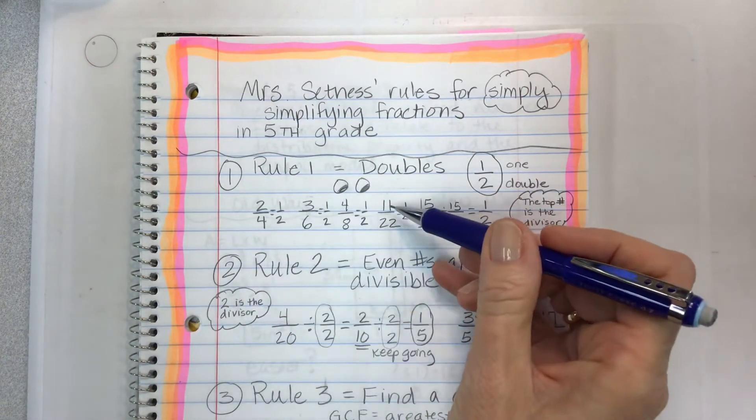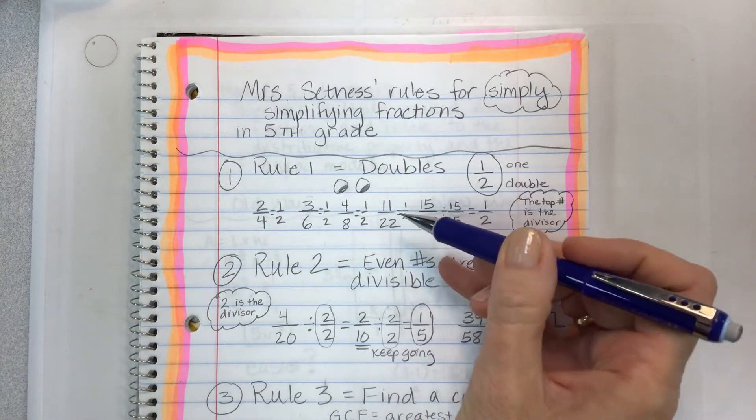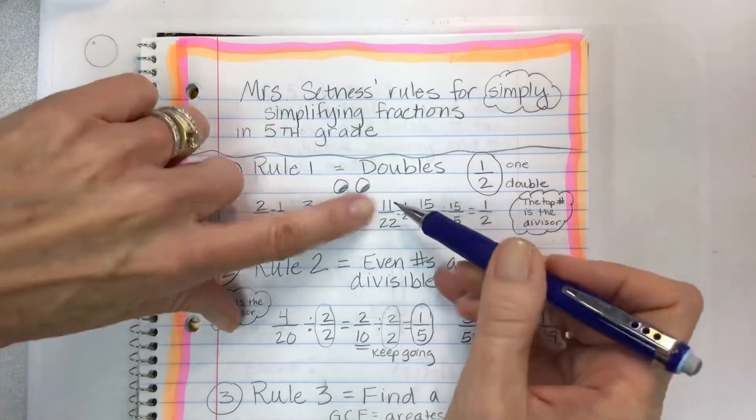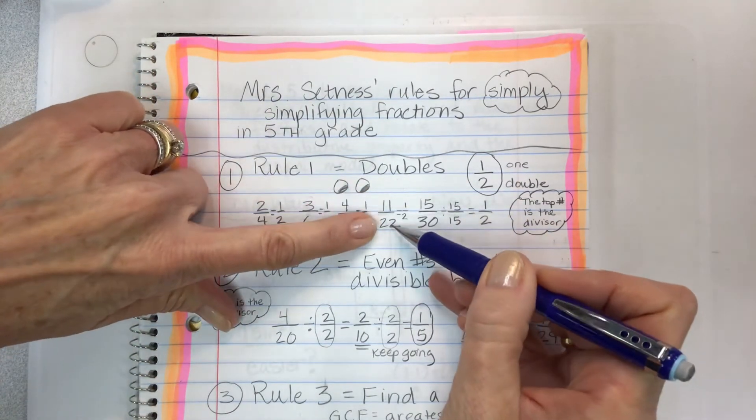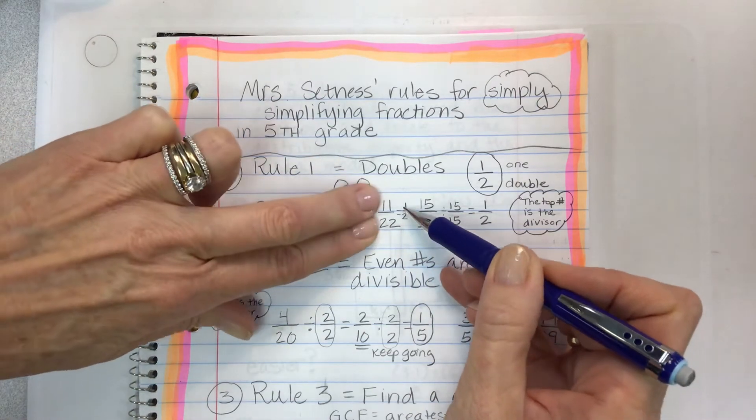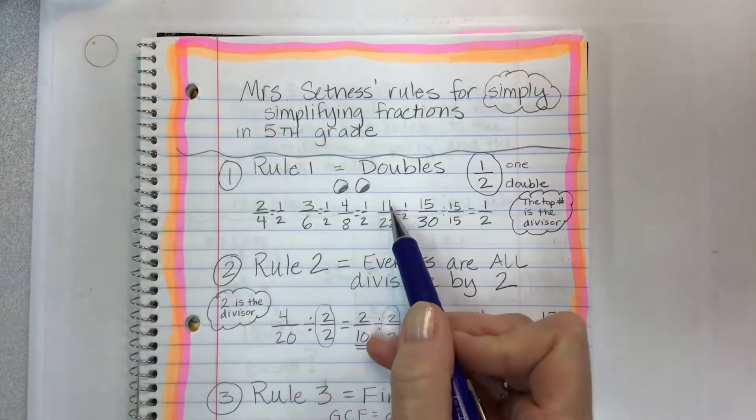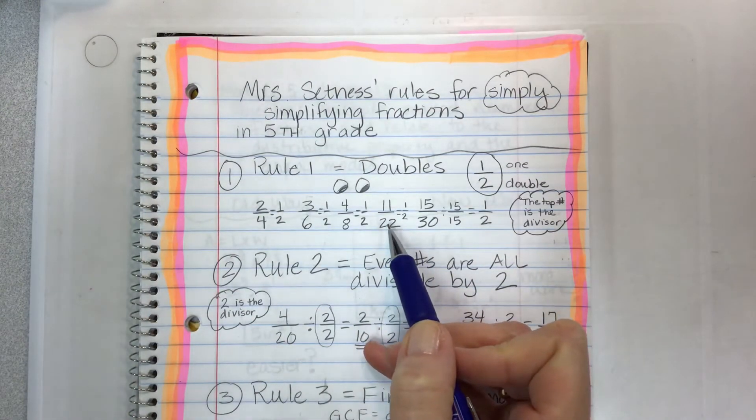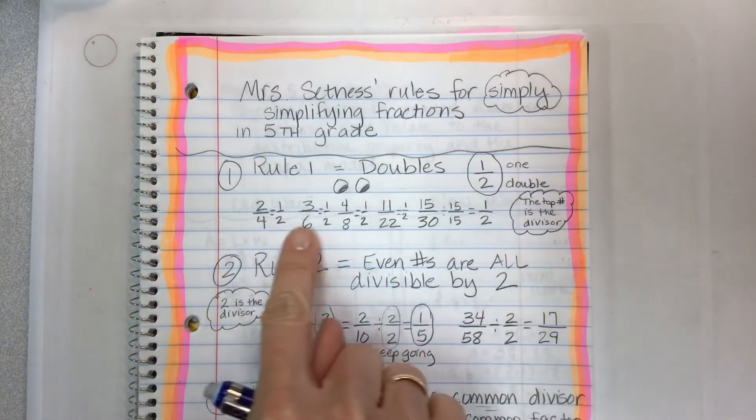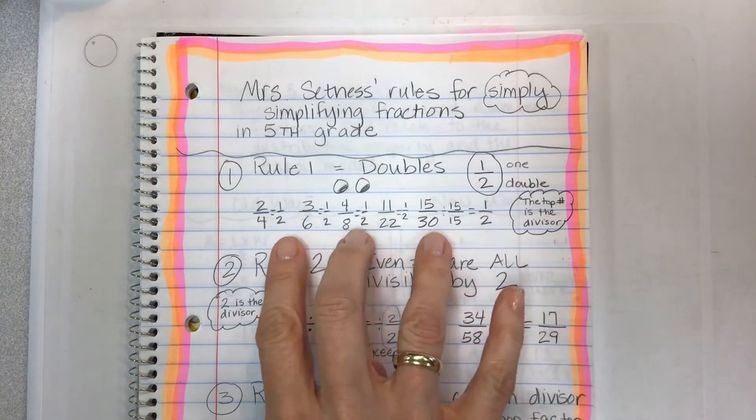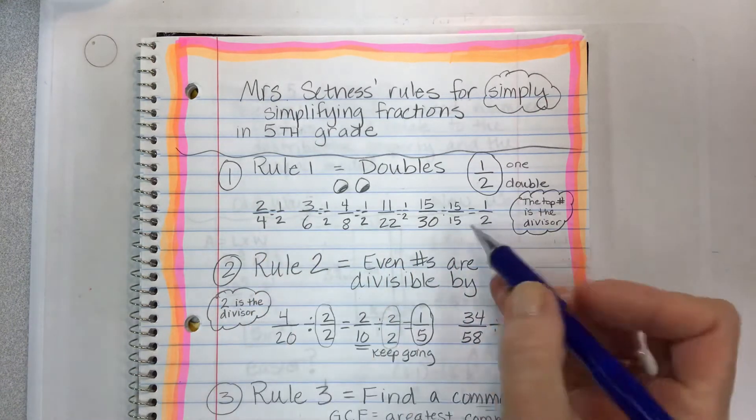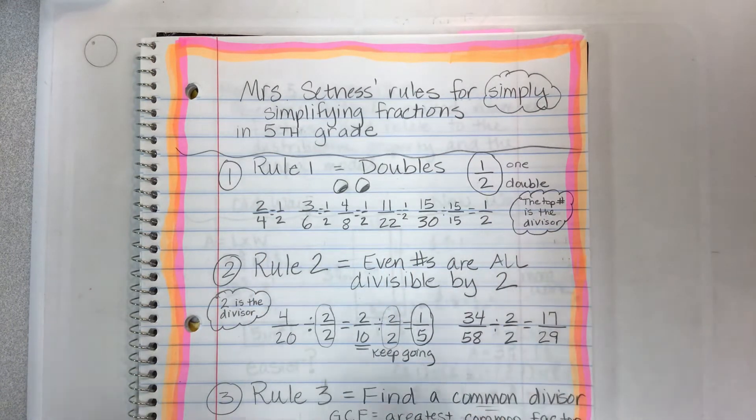You can just look at it and say this is equal to a half because when one of these makes two of these on the bottom, mathematically the top number is the divisor. So that's how you can simplify quickly and get one half. All these things that I call doubles are equivalent to one half. It's a one step change.